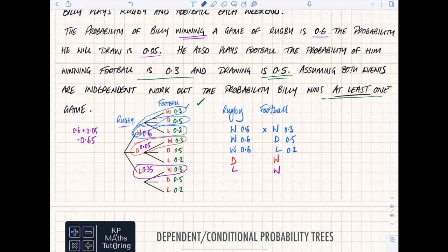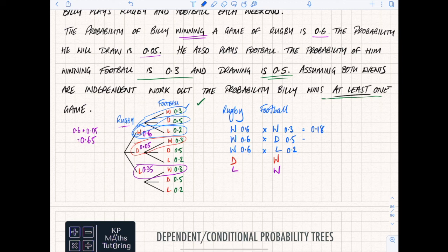Remember if you're following a path you multiply those together. So 0.6 times 0.3 - really easy to make a silly mistake and think that becomes 1.8, but it becomes 0.18 since 6 times 3 is 18 with two decimal places. Next: 6 times 5 is 30 so that becomes 0.30, and the last one will be 0.12. Those are my possible outcomes for the first three routes.